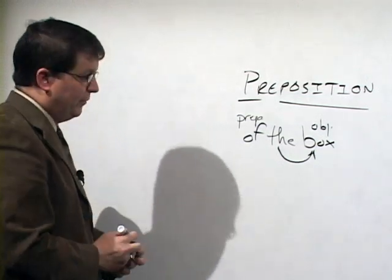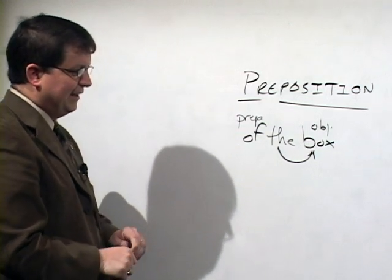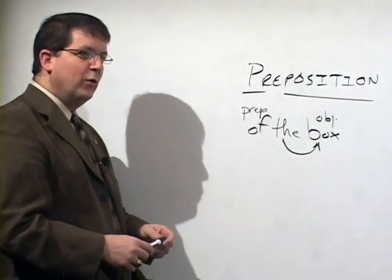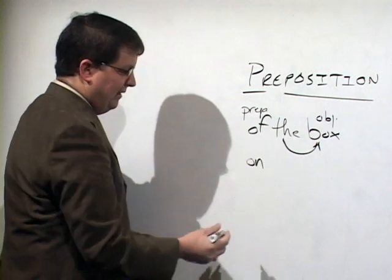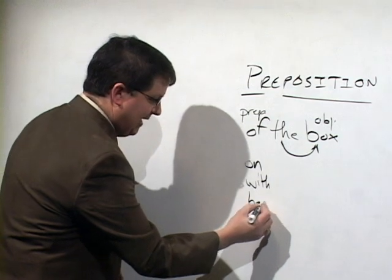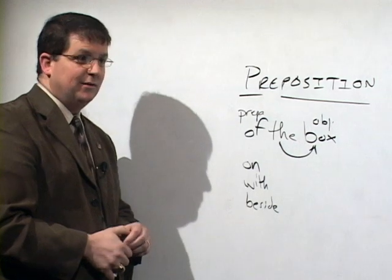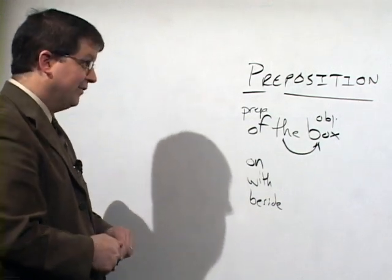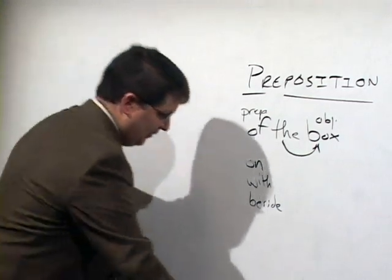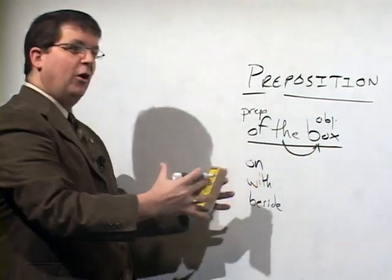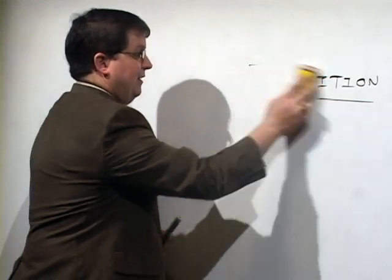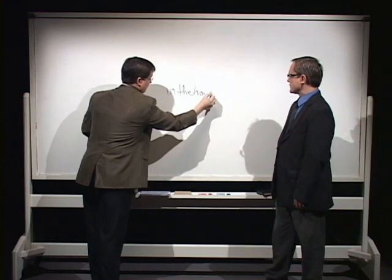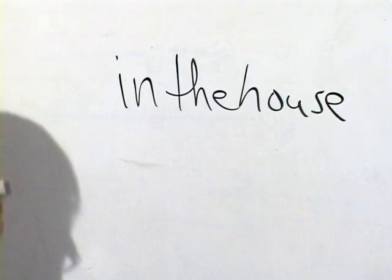There are many prepositions, and a lot of words which you may not consider prepositions are actually prepositions. Generally speaking, a preposition is easily identified if you can think about a relationship which a mouse can have with a box. The mouse can be on the box, with the box, beside the box, or around the box. There are even some which don't make as much sense physically, such as 'because of the box' or 'in spite of the box,' but those are all prepositions.